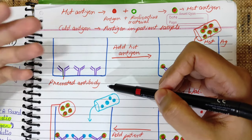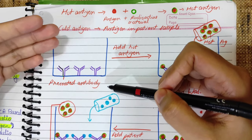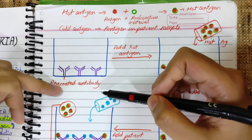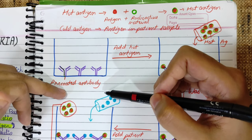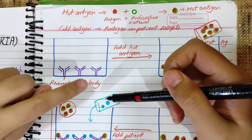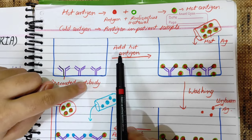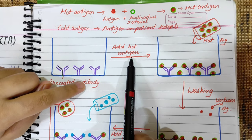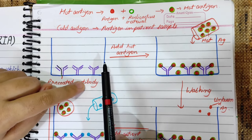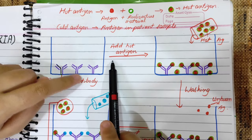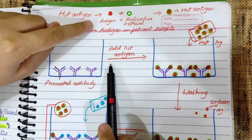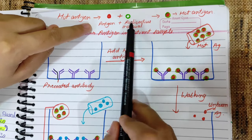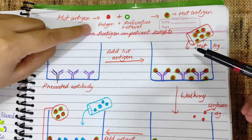It depends on which antigen you have to find — with that, we put pre-coated antibody. In the next step, we add hot antigen. Hot antigen means the antigen is labeled with a radioactive material.